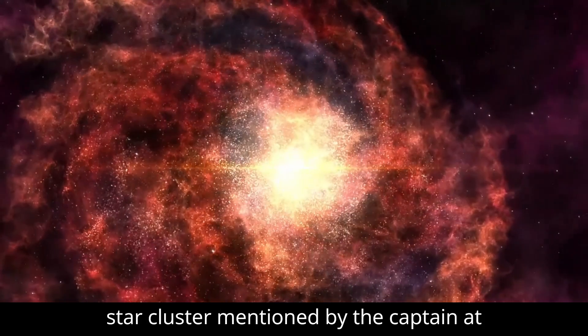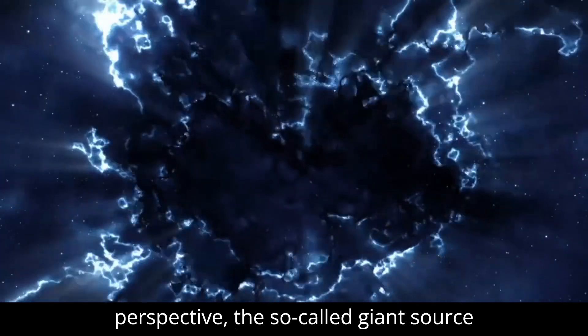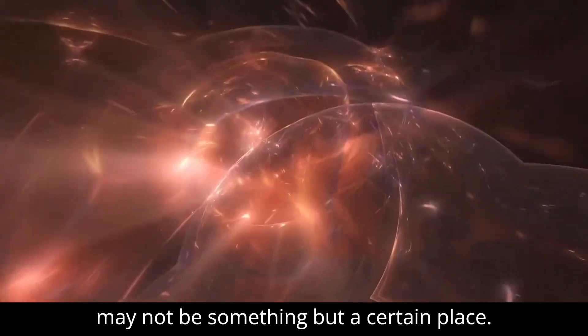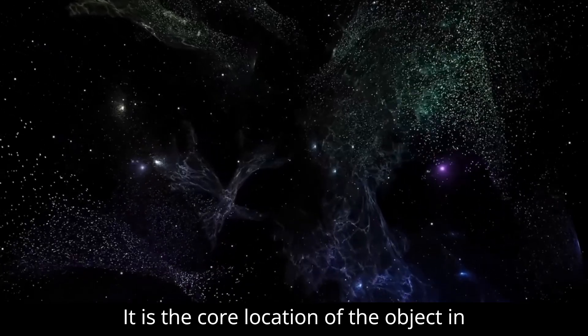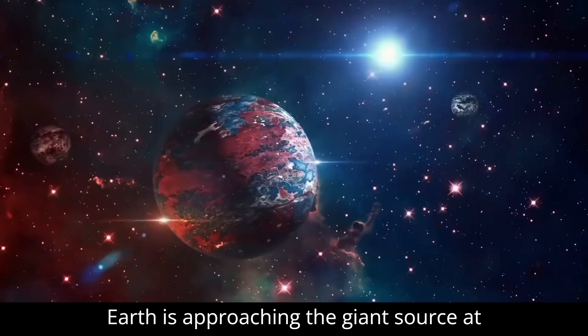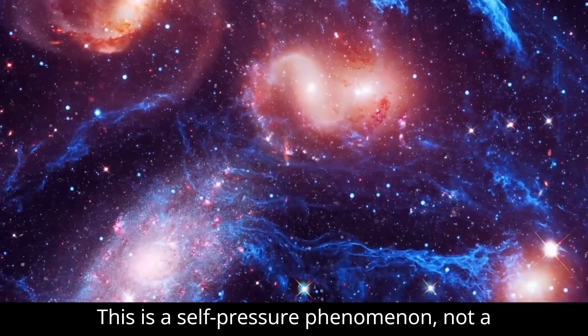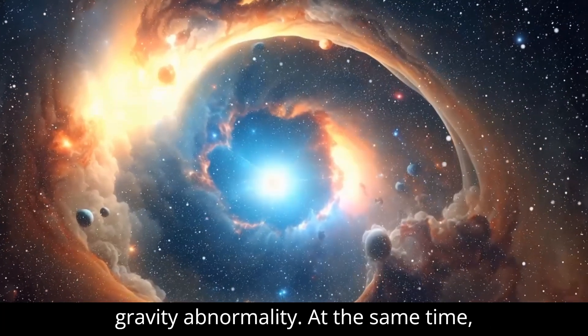This core area is the giant star cluster mentioned at the beginning of the video. So from this perspective, the so-called giant source may not be something but a certain place. It is the core location of the object in a certain area in the universe. Now our Earth is approaching the giant source at a speed of 627 kilometers per second. This is a self-pressure phenomenon, not a gravity abnormality.